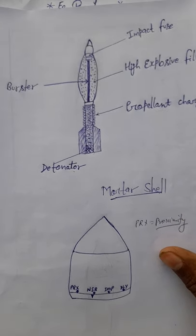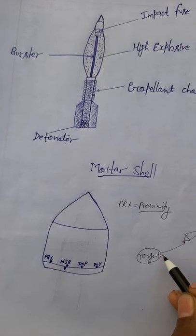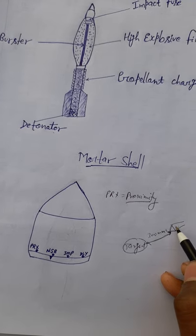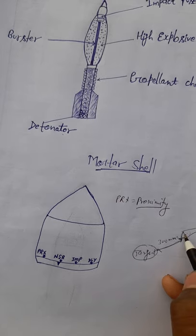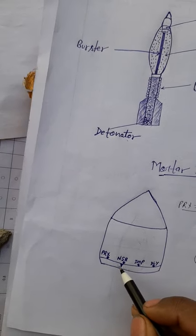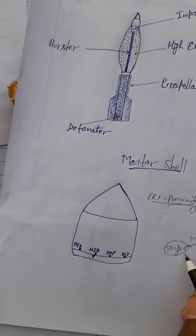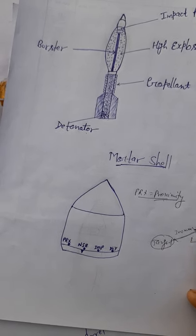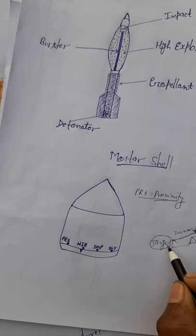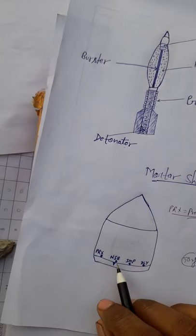If the mortar shell is set on NSB, that means near surface burst. If the distance between the mortar shell and the target is less than 300 mm, then the mortar shell bursts. So NSB stands for near surface burst.